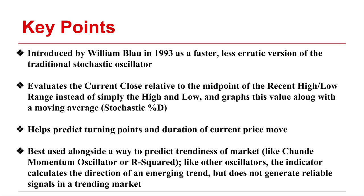Like other oscillators, the Stochastic Momentum Index is most useful for predicting turning points, which it does by giving a reading of whether an asset is over or undervalued — both conditions that suggest the approach of a turning point. Since the oscillator's overbought and oversold signals are not reliable in a trending market, the indicator is best paired with some tool for predicting trendiness, such as R-squared or the Chande momentum oscillator.